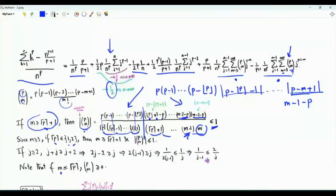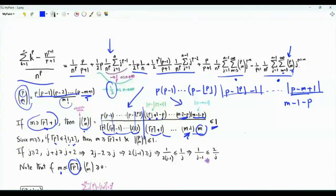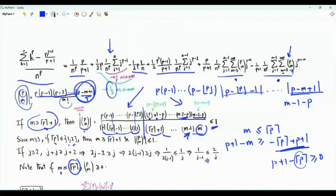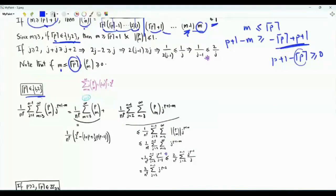If m ≤ ceil(p), the binomial coefficient is non-negative: in the numerator p·(p-1)·...·(p-m+1), the last factor p-m+1 is lower bounded by p+1-ceil(p) ≥ 0, since ceil(p) is between p and p+1. Let's first deal with the case where ceil(p) is 1 or 2.